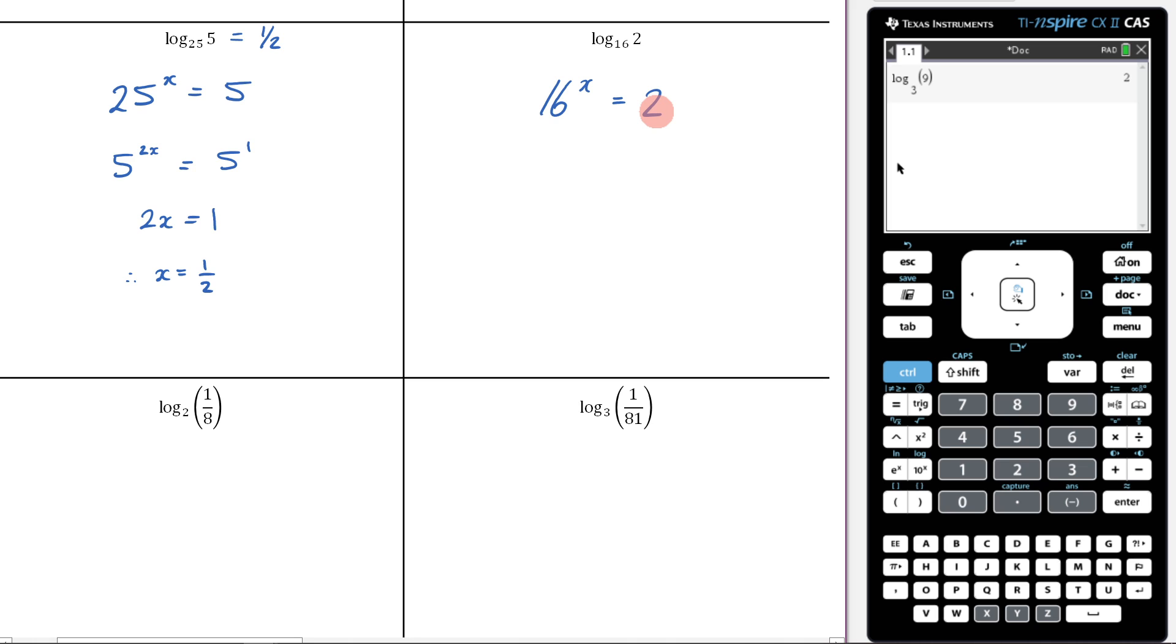Now, if you're really good with your memorization, and you know all the powers when you've got a base of 2, you'll be able to look at this and say, I know that this is going to be 1 on 4. But if you're still having trouble with it, what you could do is, well, 16 is the same thing as 2 raised to the 4. Then you've got to times it by that x there, and then this is 2 to the 1. So 4x is equal to 1. Therefore, x is equal to 1 on 4.